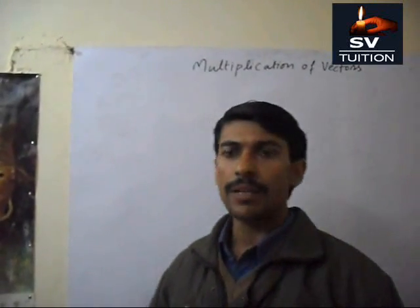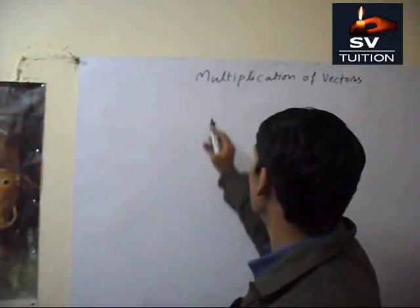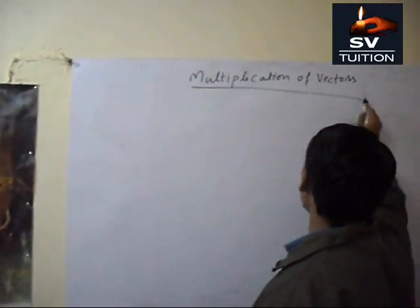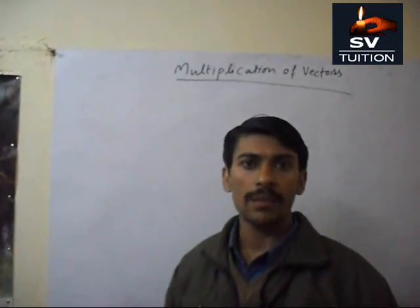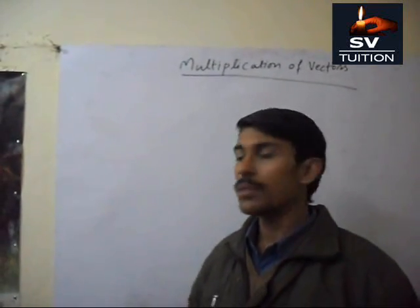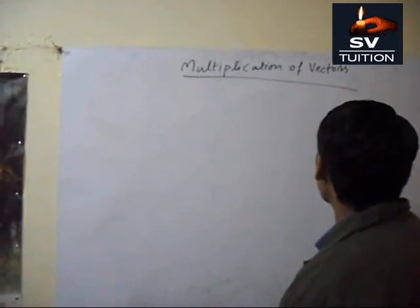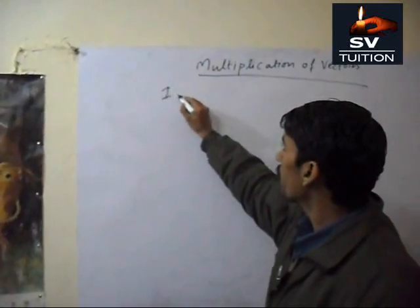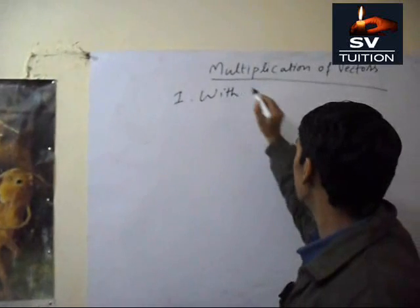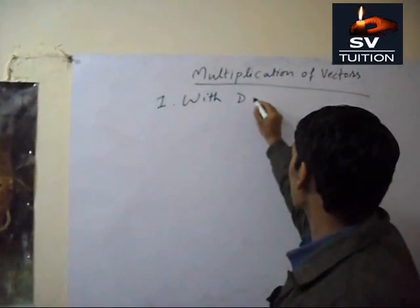Multiplication of vectors means to multiply two or more vectors. There are three methods with which we can multiply two or more vectors. First, with dot product.